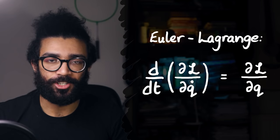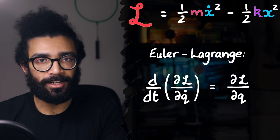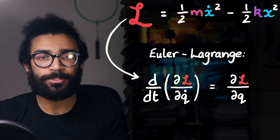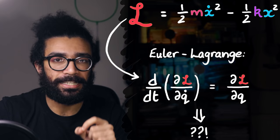Anyway, so we've got this generic equation, the Euler-Lagrange equation, and we can take our Lagrangian for a specific system and plug it into our equation. This will tell us something about that system. In fact, when we plug in the Lagrangian, what we'll find is known as the equation of motion for our system.